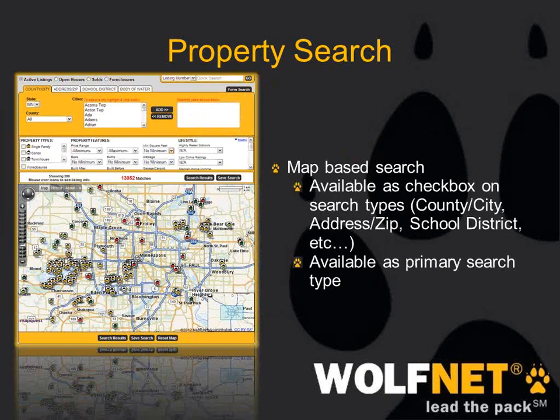If you've opted to add map tracks to your search solution, you can also search for foreclosures in the same ways as with the standard search solution. You can click on foreclosures at the top or use the checkbox right below property type. If the foreclosures search type is selected, the map will display only foreclosure listings regardless of the other search parameters you've entered. And as with the form search, the short sale checkbox, if available, will be displayed underneath the property type.